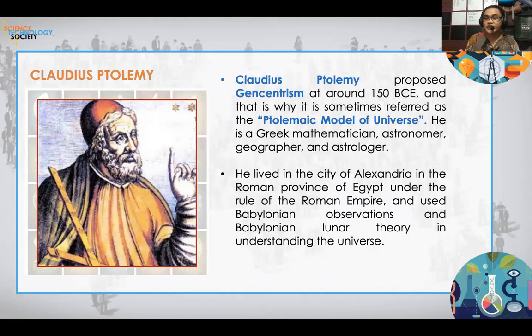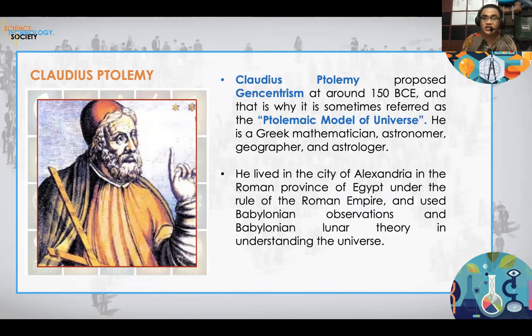Claudius Ptolemy proposed geocentrism at around 150 BCE, which is why it is sometimes referred to as the Ptolemaic model of the universe. Claudius Ptolemy was a mathematician, astronomer, geographer, and astrologer from Greece. He lived in Alexandria, a city of Rome and a province of Egypt under the Roman Empire, and used Babylonian observations and Babylonian lunar theory in understanding the universe.